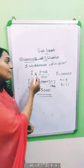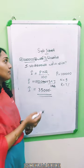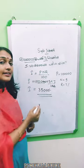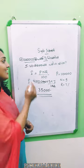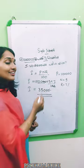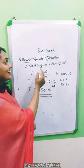I is equal to PNR by 100. The principal, the number of years is 5 and rate. So, if you have a question, you can write.